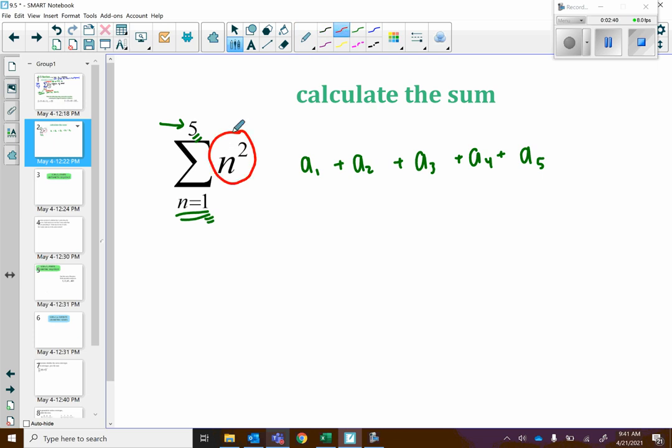Notice n is the term number. So our first term is 1 squared. Our second term is 2 squared. 3 squared. 4 squared. And 5 squared. If you were to square all those things, add them all up, if you want to pause your video to do that, but I know you're smart enough, we would get 55. That is all this is asking you to do.